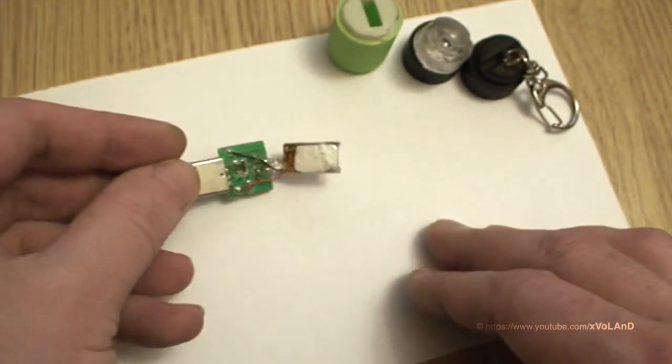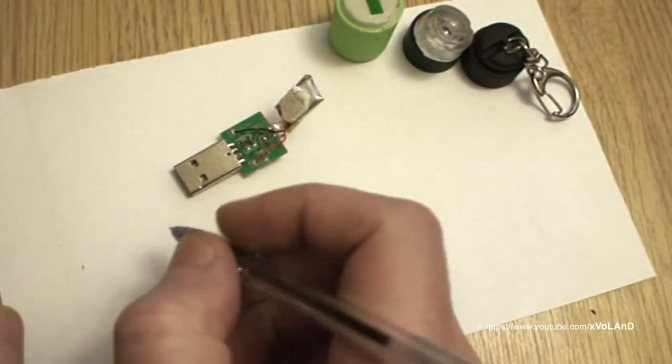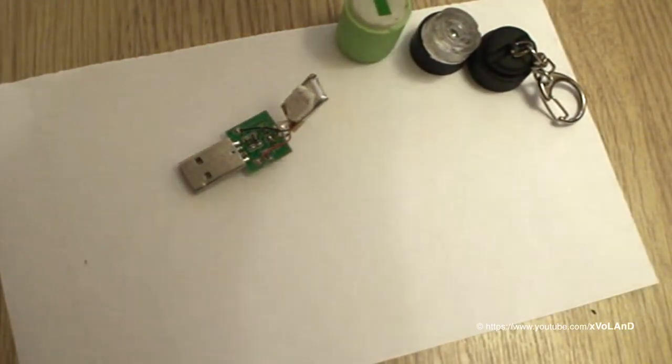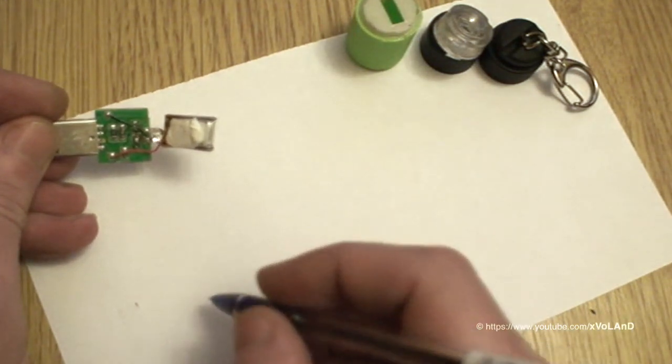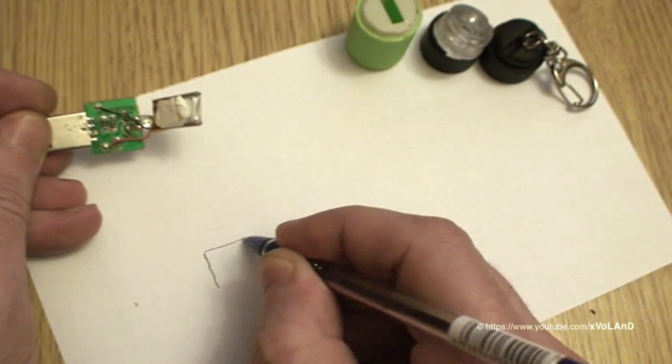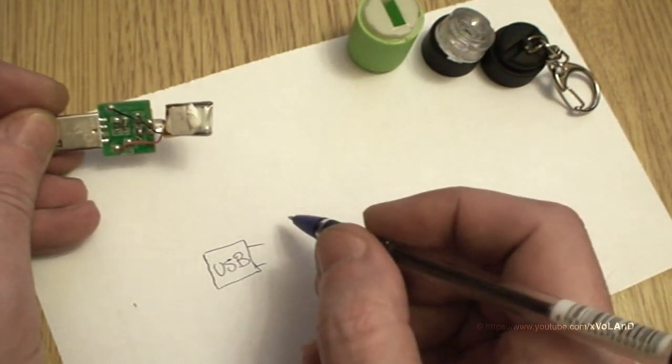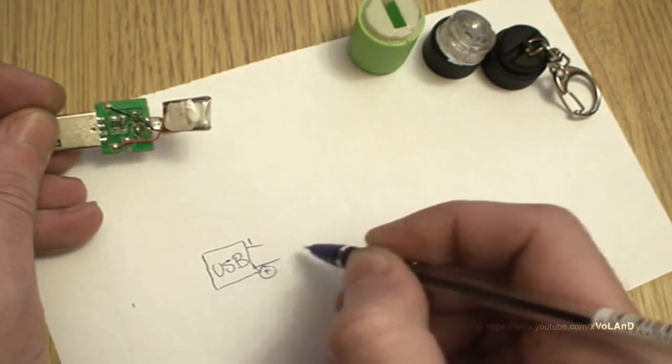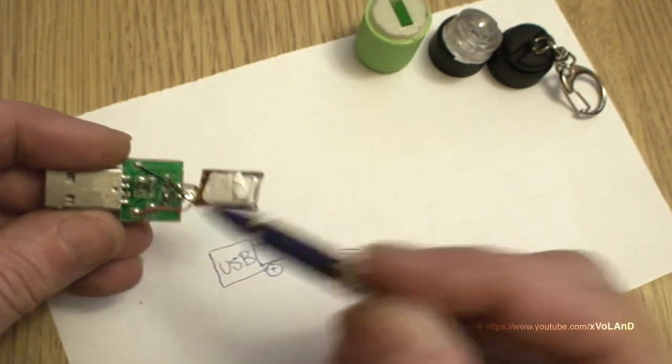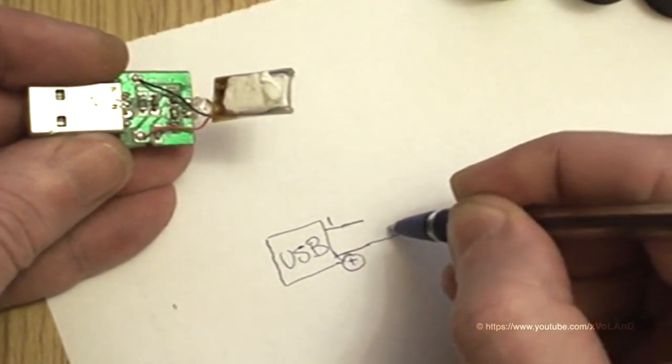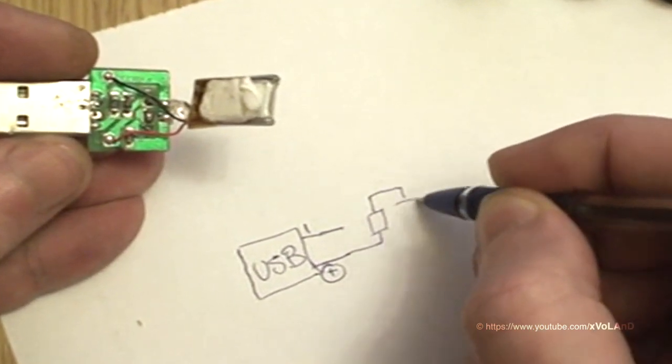So try to define this PCB and try to analyze how it works. Start from USB. We have two contacts, one is plus and another minus. Next is the resistor, started with the Zener diode.